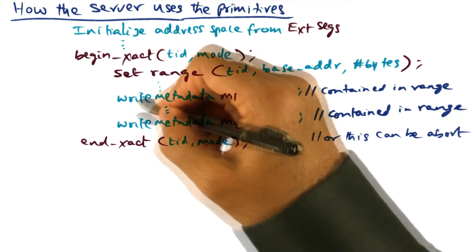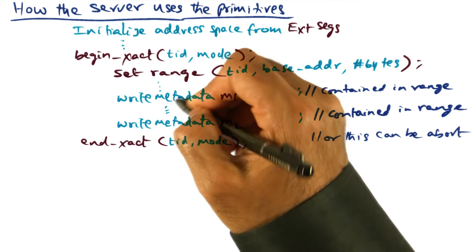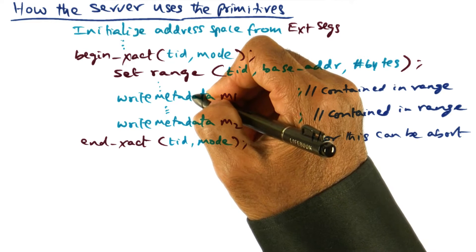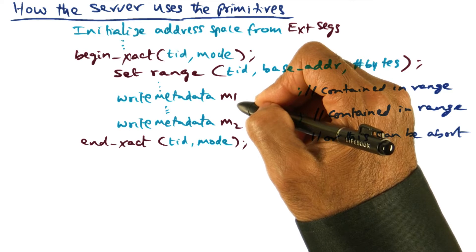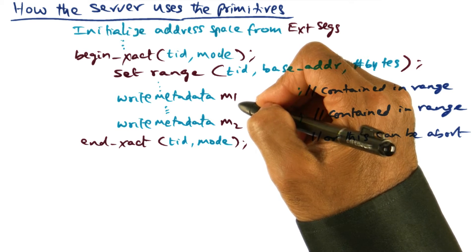And once they have done that, then the rest of the code is normal code that they write in terms of manipulating data structures. So they may be writing to a data structure M1, which is really metadata that needs to be persisted.